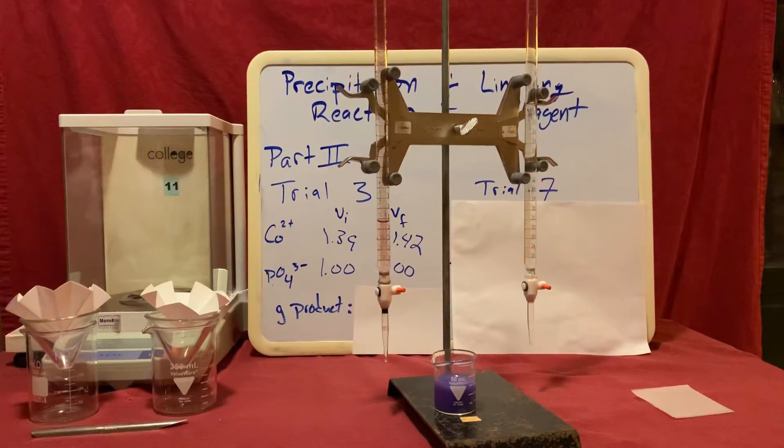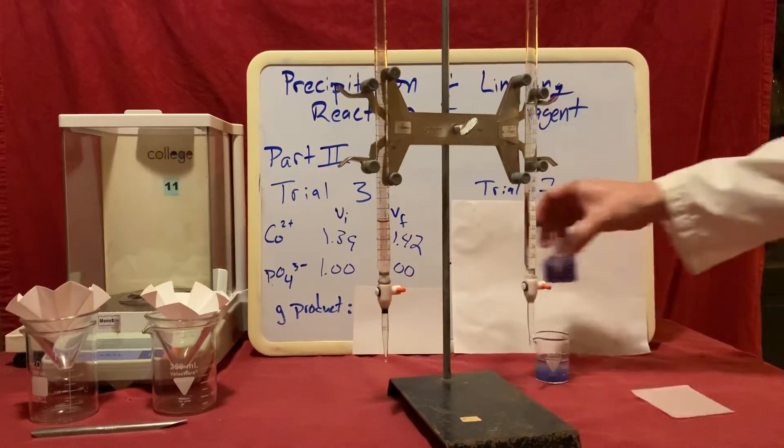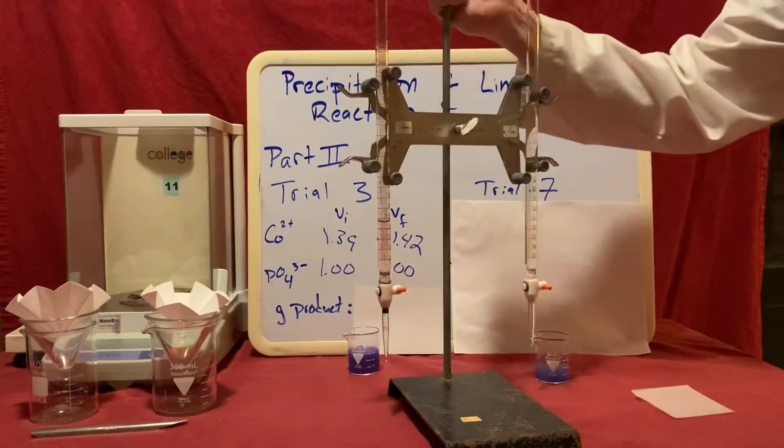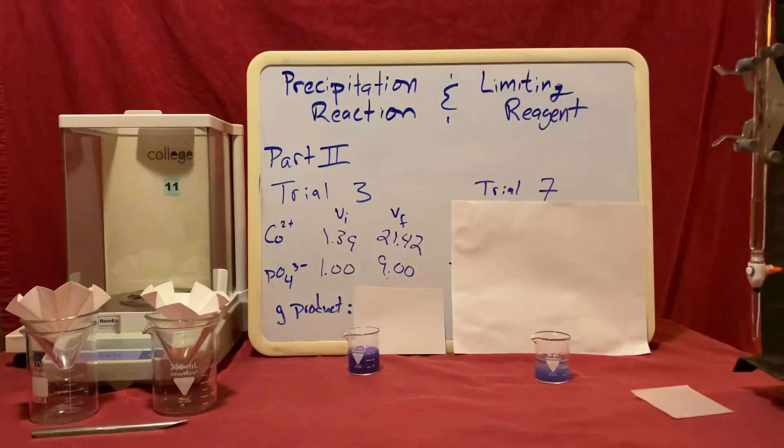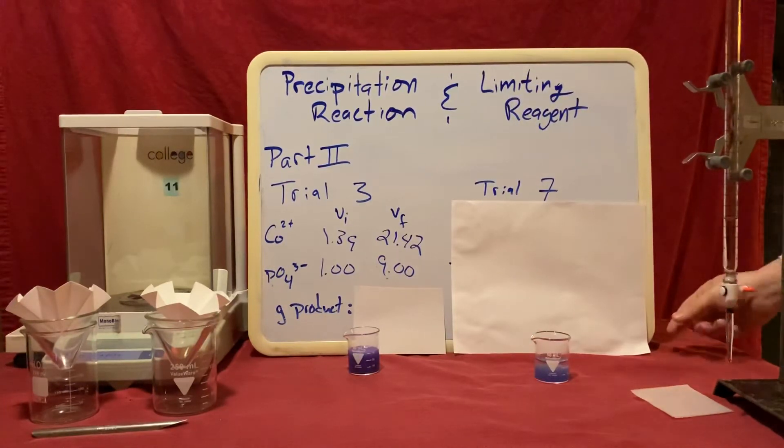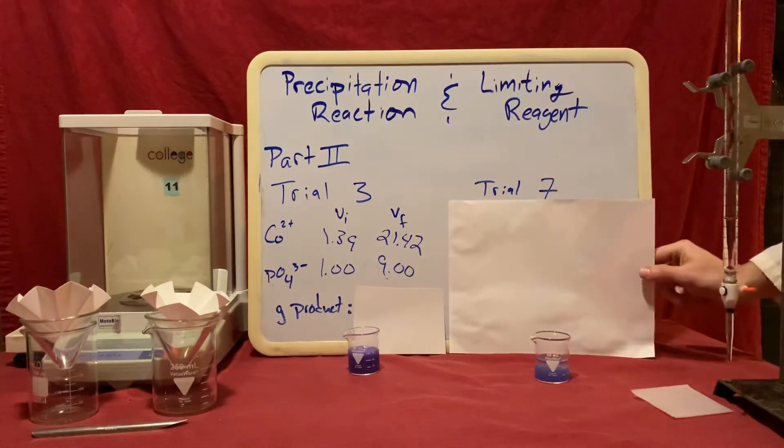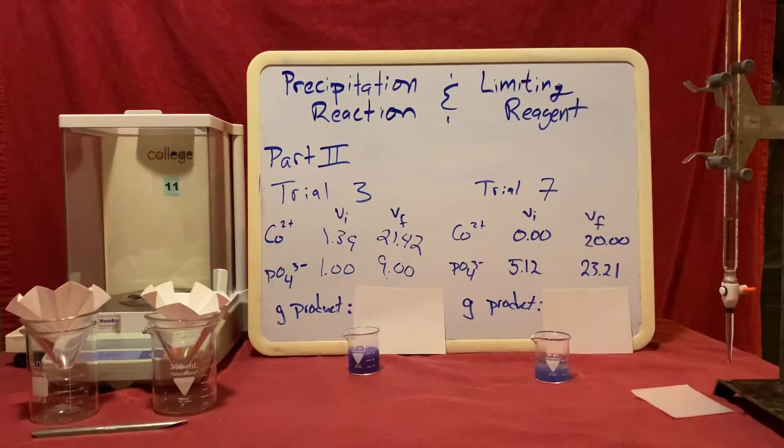Instead of making you watch me do that again for our trial 7, I have prepared a trial 7 sample. So now we have one for trial 3 and one for trial 7 and we are all finished with our burettes. You can see here the initial and final volumes for trial 7 that I collected.